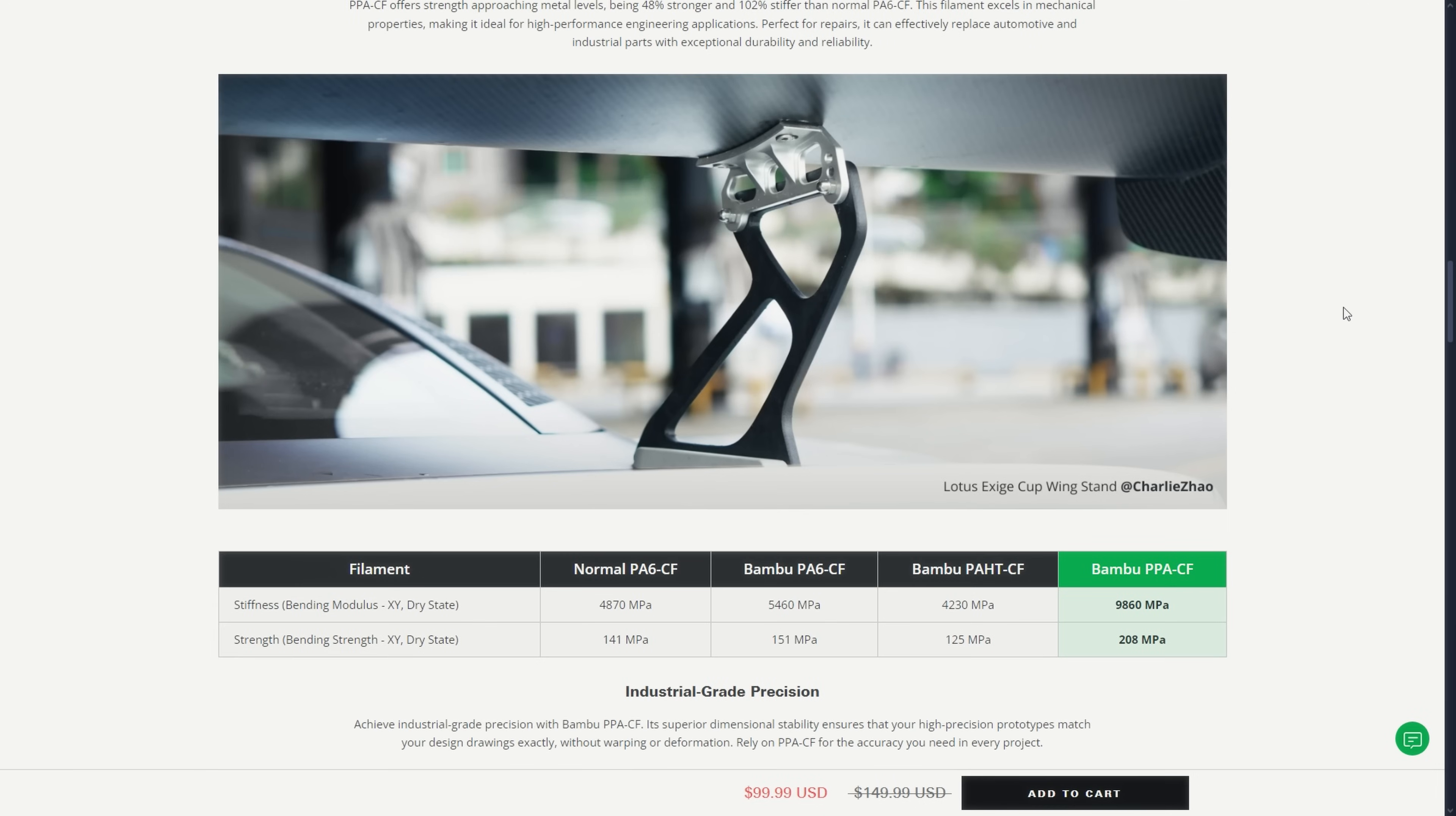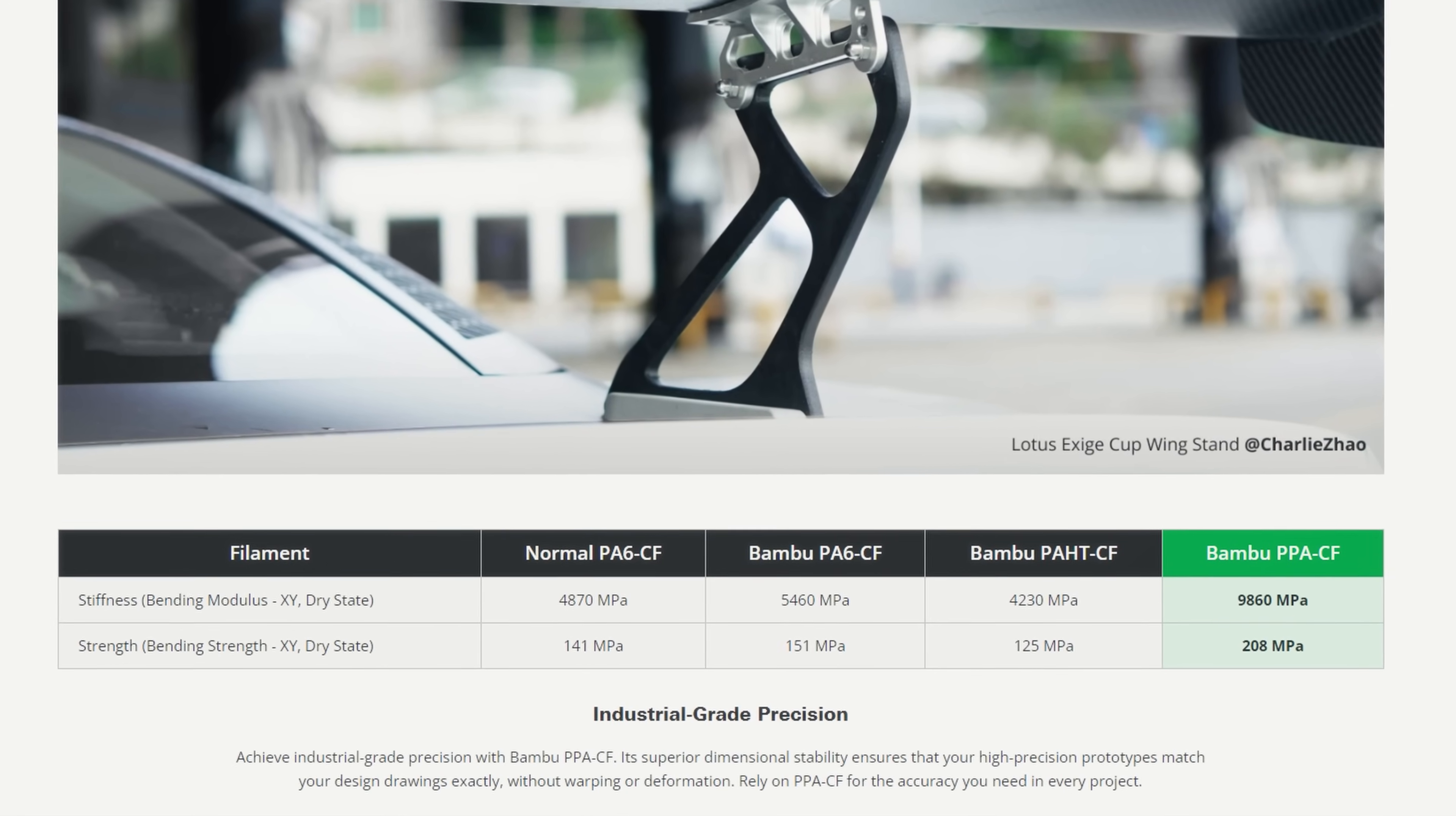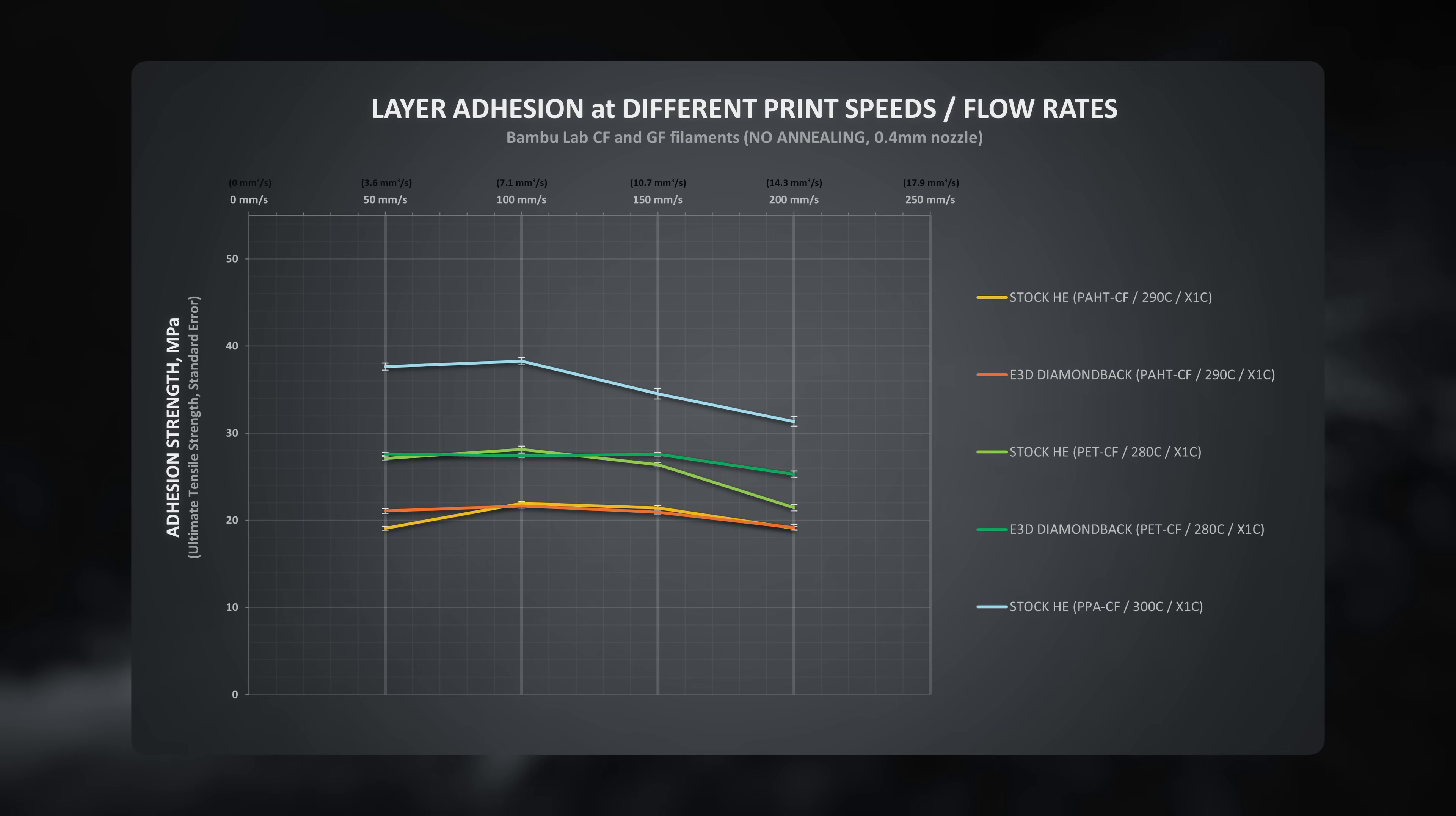Nonetheless, those numbers are still very impressive for a plastic that you can casually print at home. Testing the layer adhesion of the PPA-CF filament provided the best result so far. When using the stock hotend, we see that it likes to be printed hot and slow rather than faster. The same trend continued with the E3D Diamondback hotend, as there was no clear adhesion benefit.